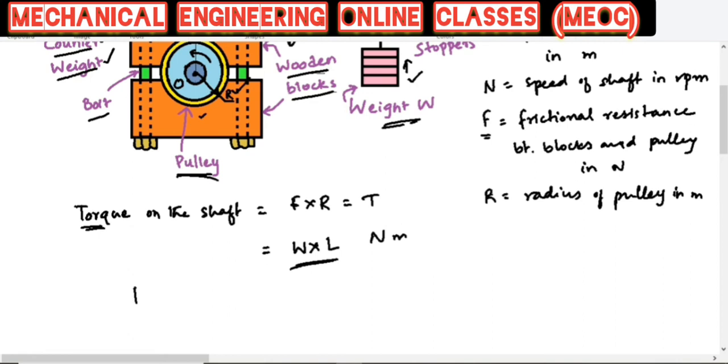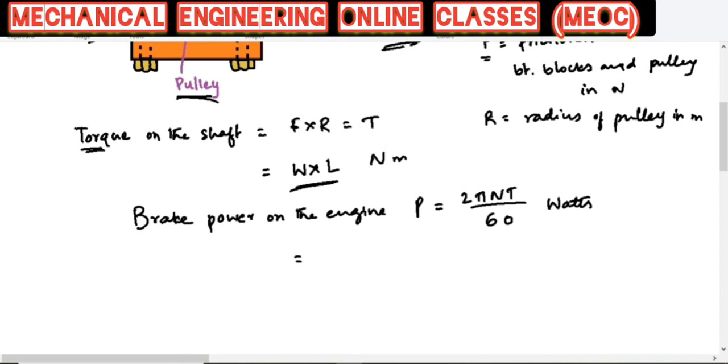From this we can find the brake power on the engine as P = 2πNT/60 watts. If I replace T with either WL or FR, then I will get P = 2πNWL/60 watts.